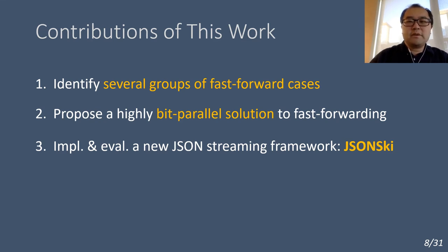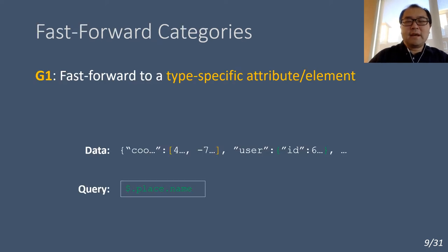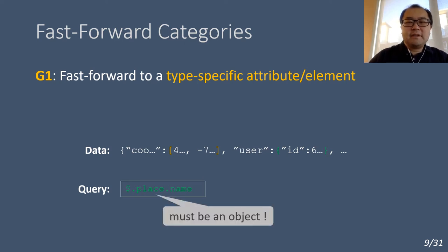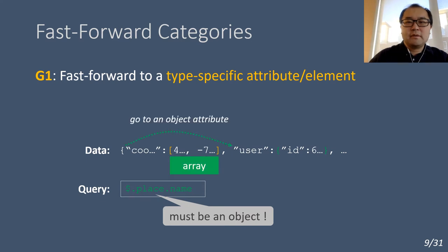Let's take a look at some examples where fast-forward is applicable. Consider this JSON path query, which is to find the name attribute of place. Based on the query structure, we can easily infer that place should be an object, otherwise it shouldn't have an attribute. Based on this type information, the streaming may directly fast-forward to an attribute of object type. In this piece of example data, the streaming can fast-forward over the first attribute, which is an array, then resume the query matching from the second attribute, which is an object.